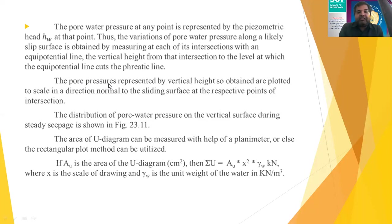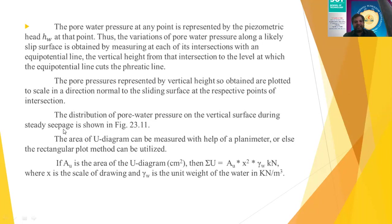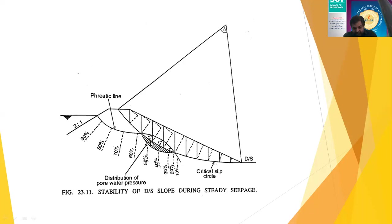The pore pressure represented by the vertical heights obtained are plotted to scale in the direction normal to the sliding surface at the respective point of intersection. The distribution of pore pressure on the sliding surface during steady seepage is shown in the figure. Basically, you draw the perpendicular to the flow line — this line gives you the normal component minus the value of U. So this is your U value shown as a vertical line, and from the N value you subtract this U value, giving you the effective value σ_N' = σ_N − U.